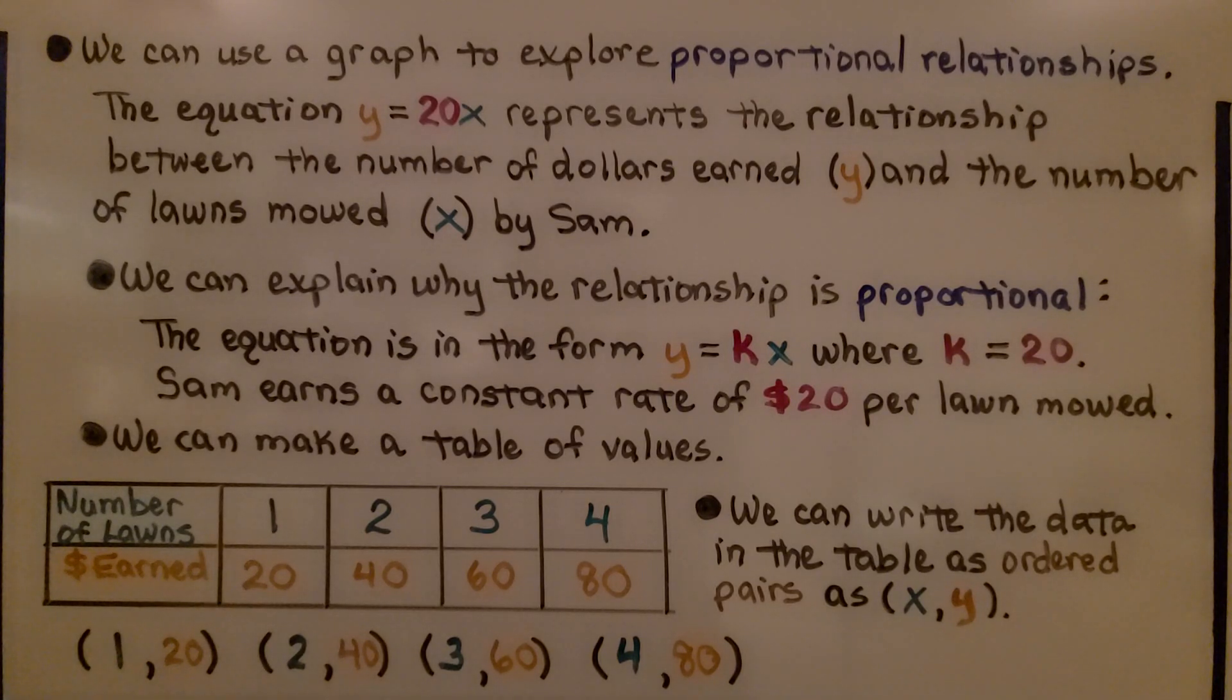We have the number of lawns and the dollars earned, and we can write the data in the table as ordered pairs as (x,y). For one lawn, he has $20. For two lawns, $40. For three lawns, $60. And for four lawns, $80.